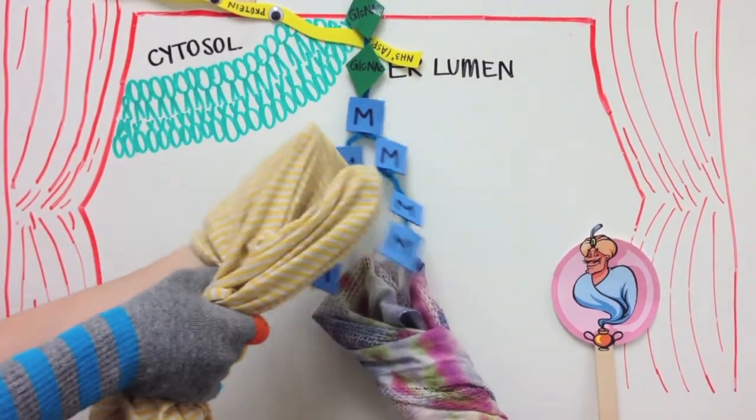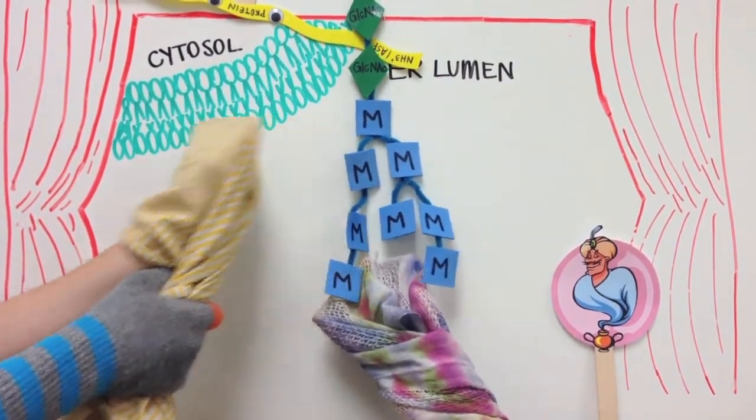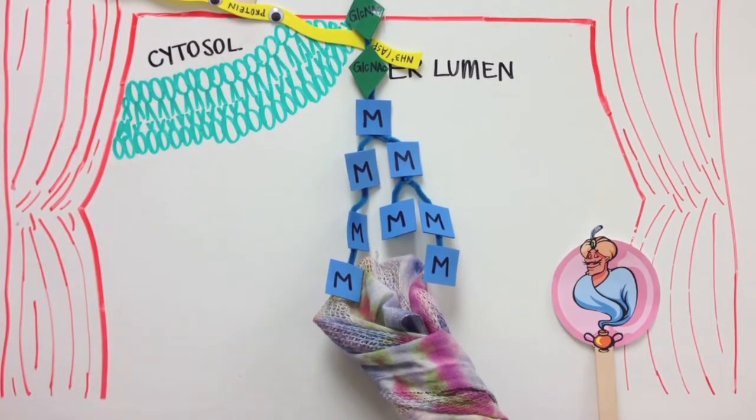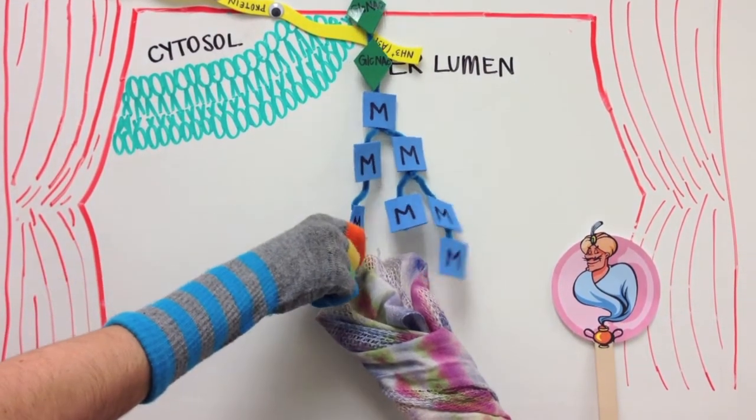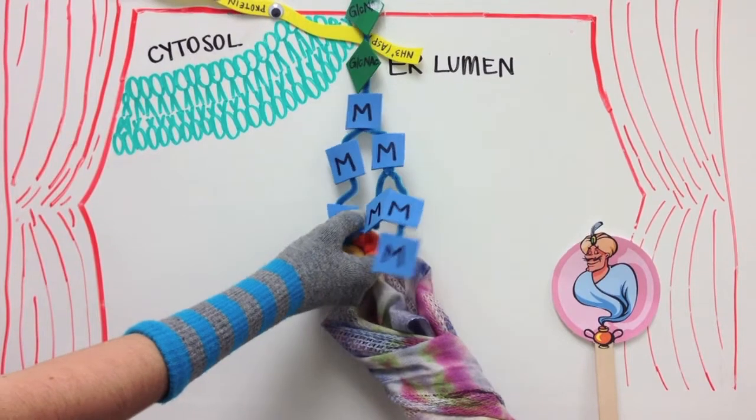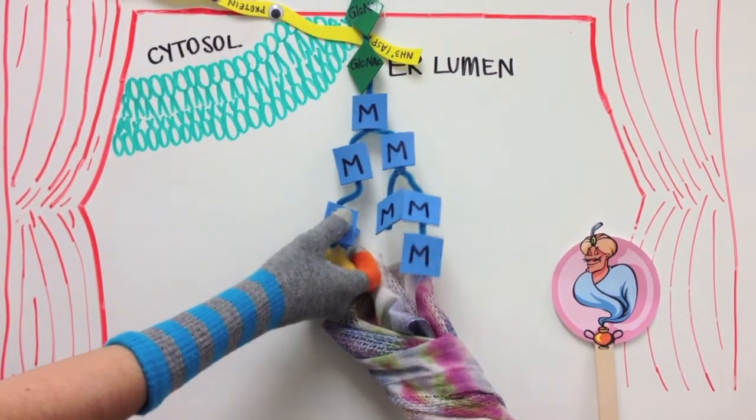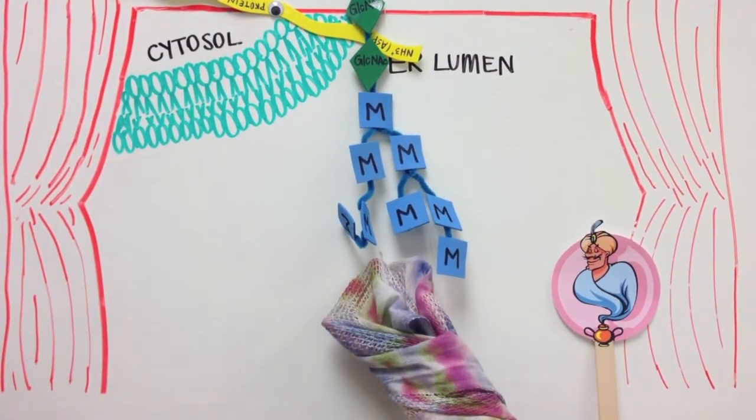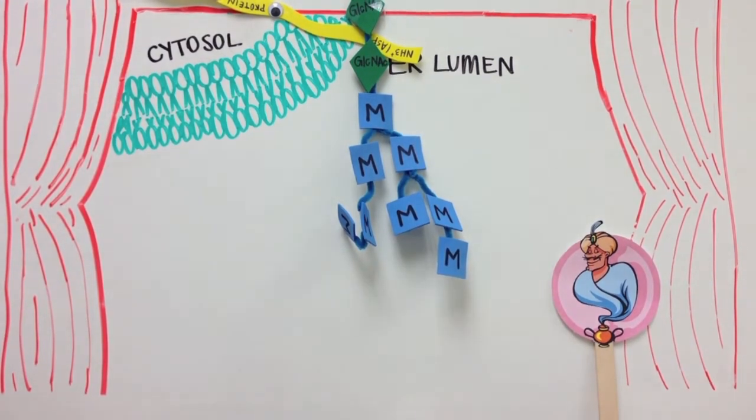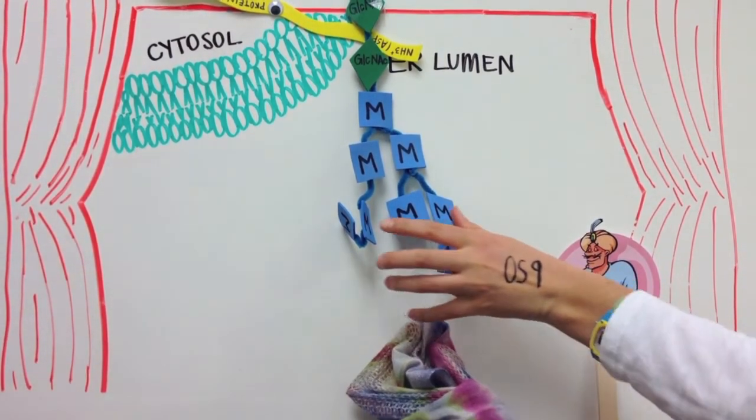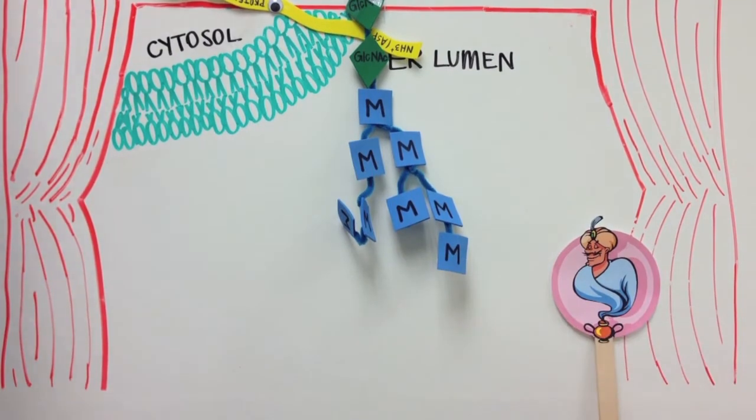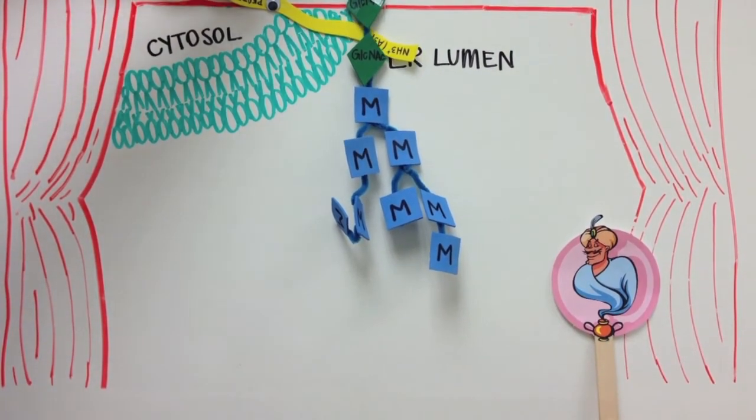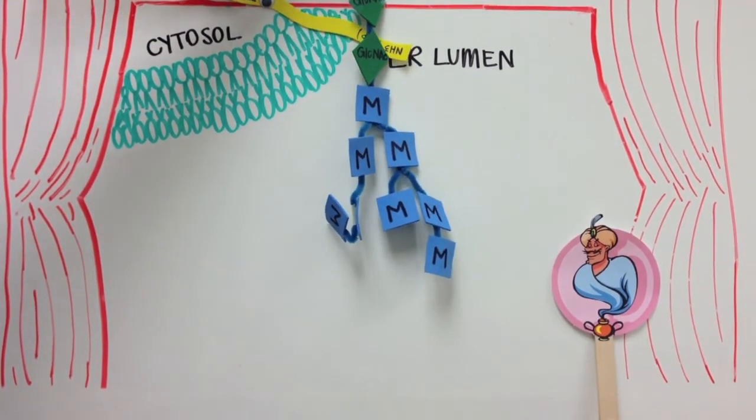Glycoproteins such as this one that cannot fold are retained in the ER for a longer period of time, and are trimmed by mannosidase-1. If this trimmed version is recognized by OS-9, the misfolded protein will be moved out of the ER and into the cytosol, so it may be ubiquitinated and then degraded in the proteasome.